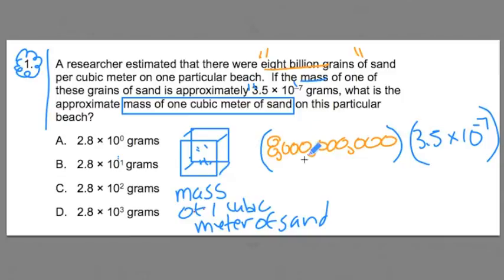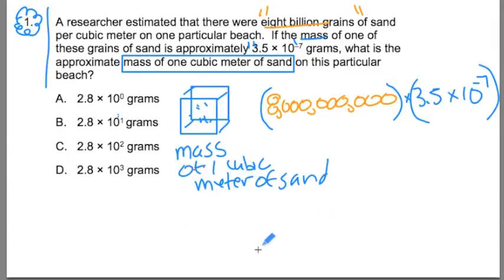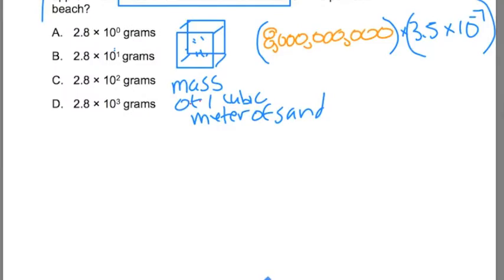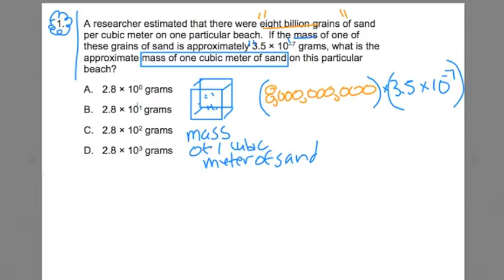Doesn't it make sense that we take the 8 billion and multiply it by the 3.5 times 10 to the negative 7th? Well, that's right. This is the gist and this is what we're going to do. Lots of ways to go about solving this problem. I'm going to do it in three steps.